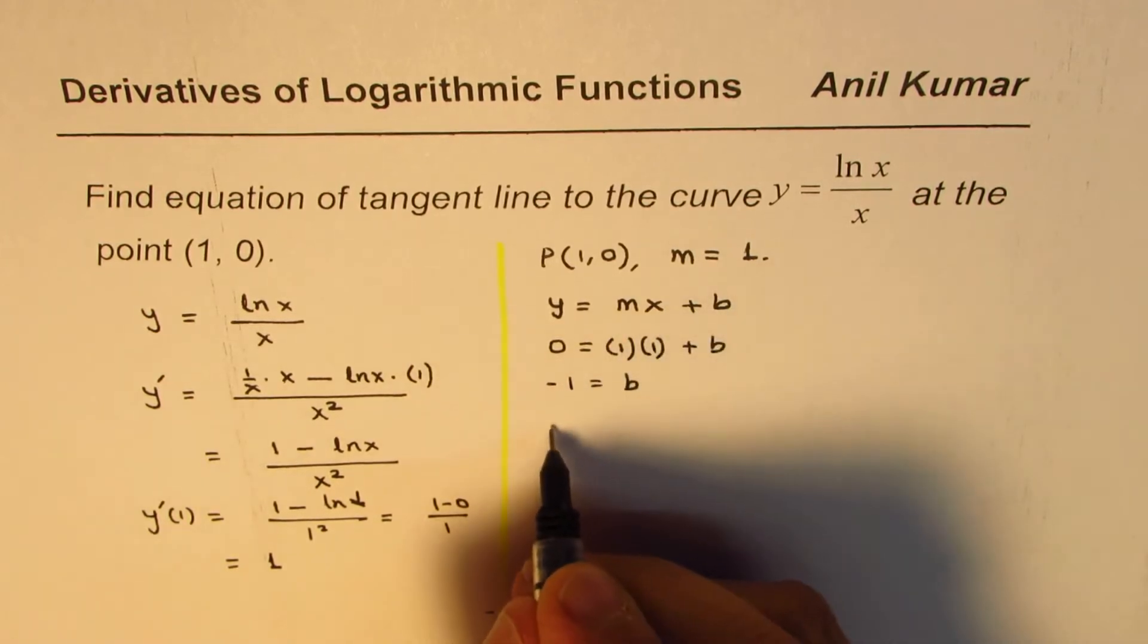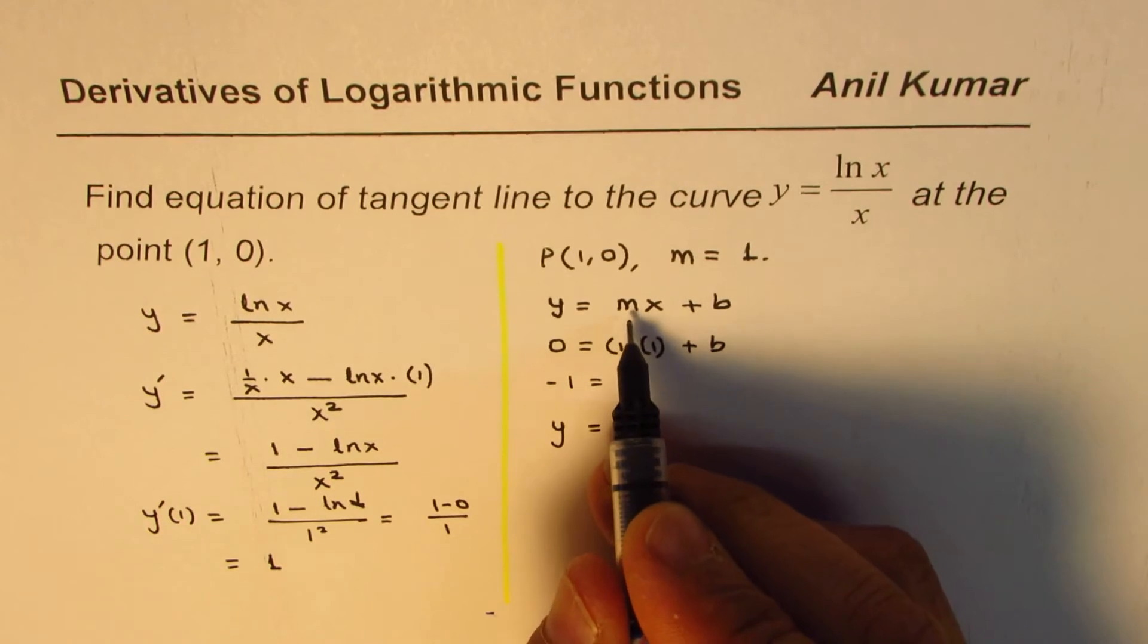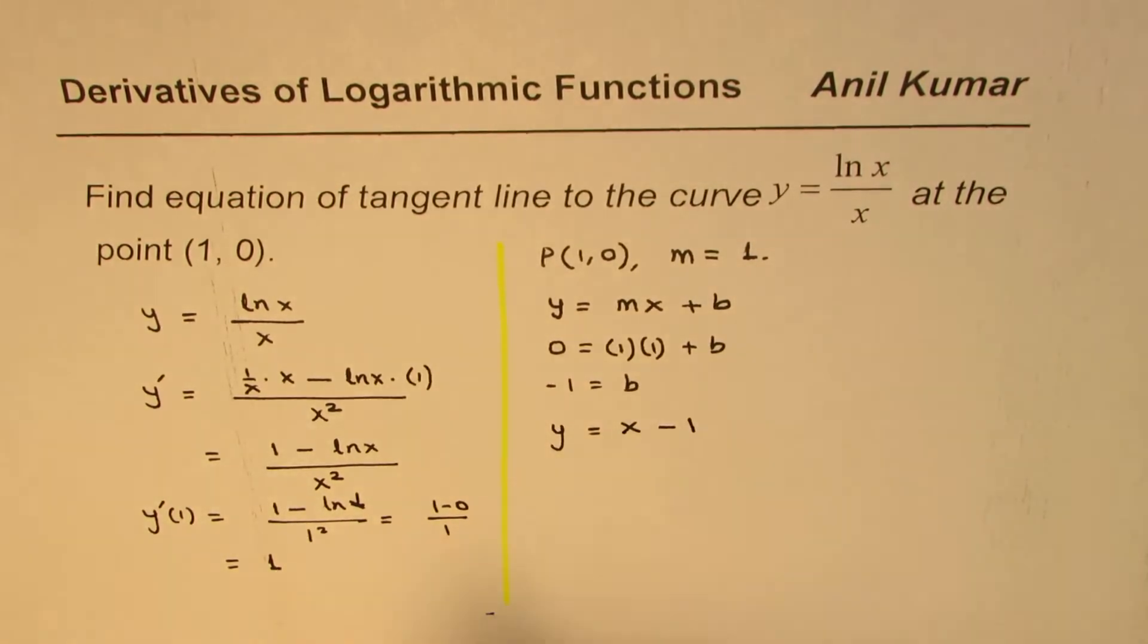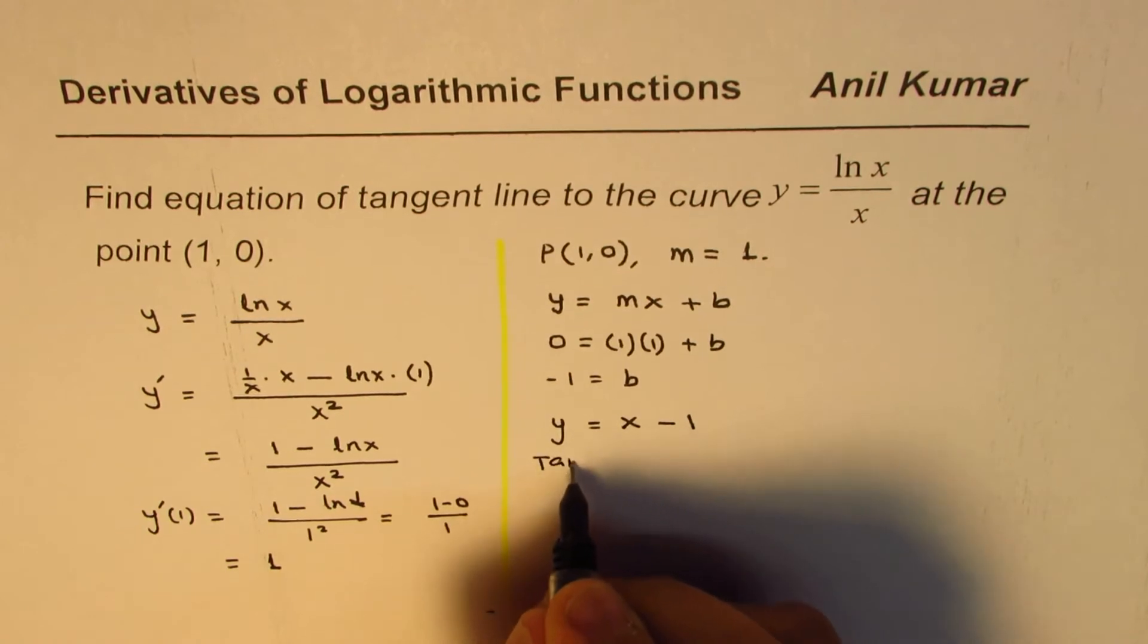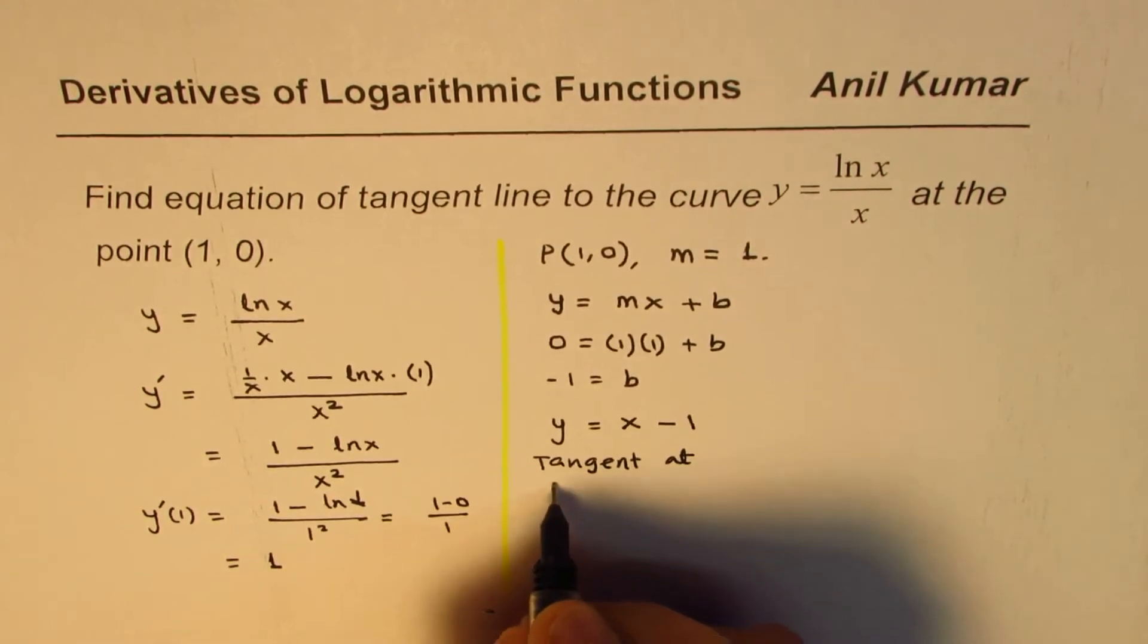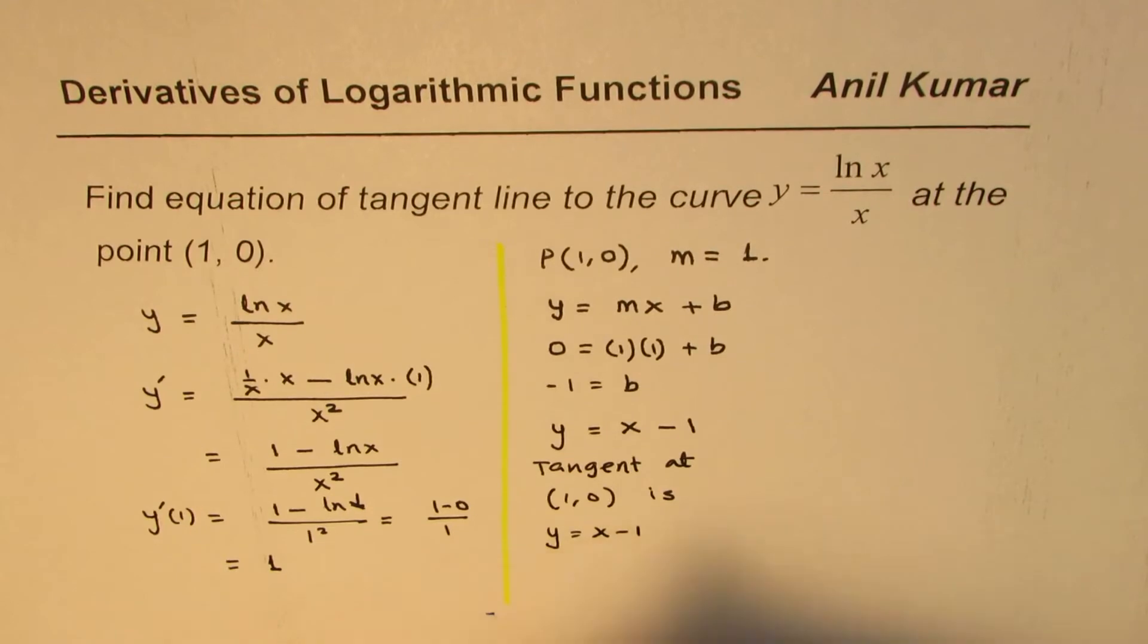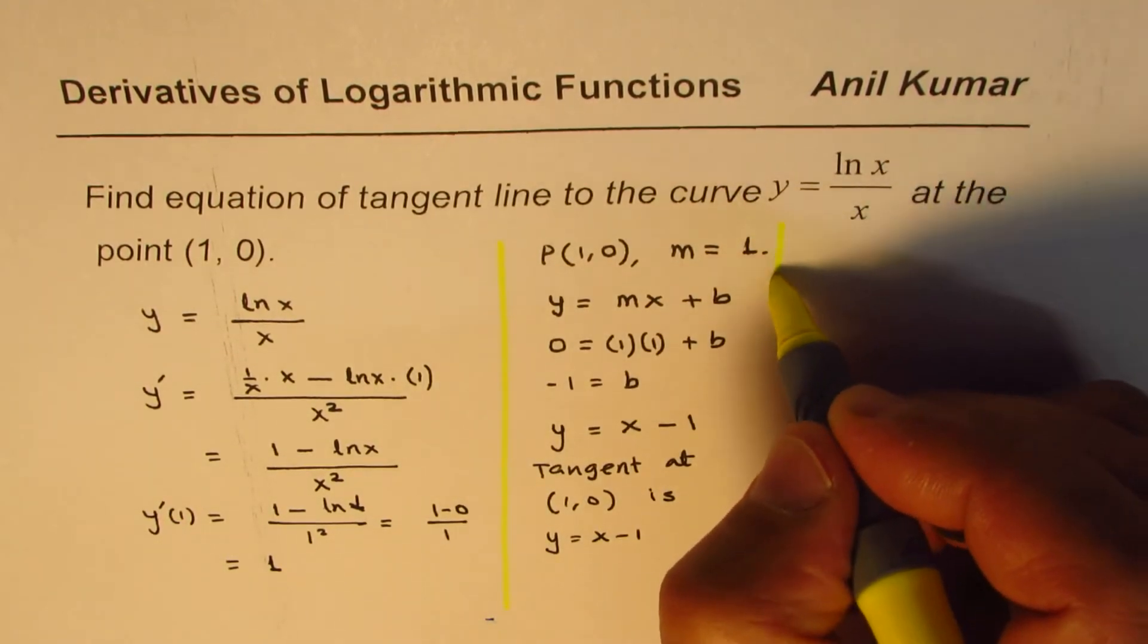So therefore, we get the equation of this line as y equals to... Slope m is 1, 1 times x is x, minus 1. So that becomes the equation of tangent line. So this is tangent at (1, 0) is y equals to x minus 1, correct? So that is how you could find equation of a tangent line at the given point.